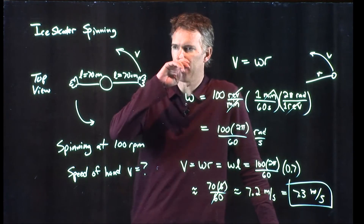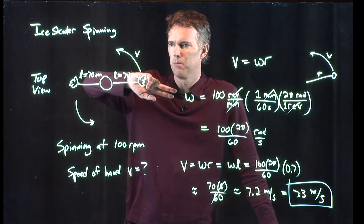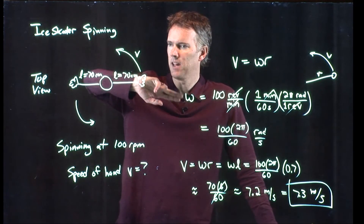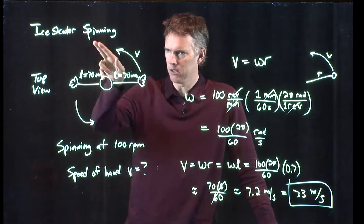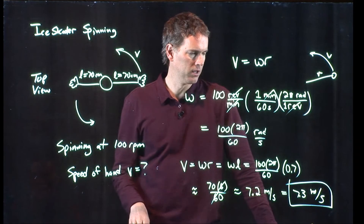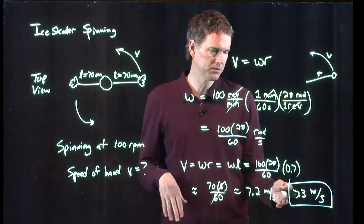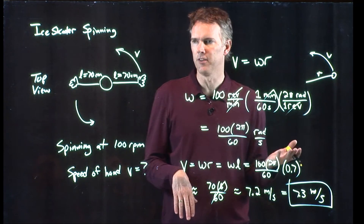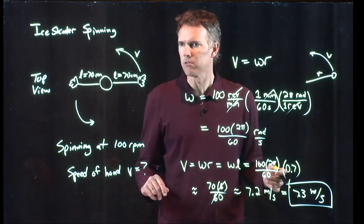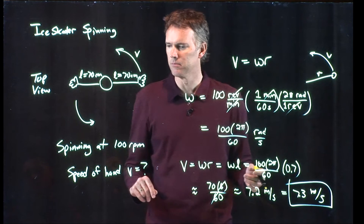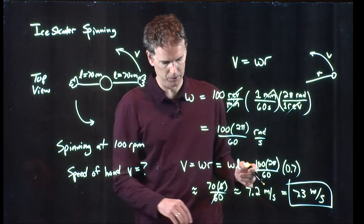That's how fast Brian Boitano's hands are moving as he spins in a circle, which is roughly 15 miles per hour. Sounds reasonable — a pretty reasonable number.